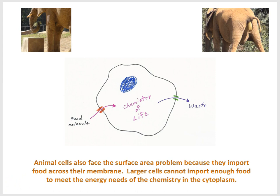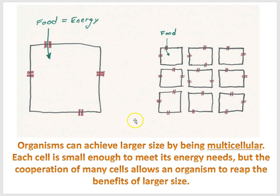So how do animals get around this? How can animals be big if their cells have to be small? And of course the answer is multicellularity. So organisms can achieve larger size by being multicellular. Each cell is small enough to meet its energy needs, but the cooperation of many cells allows an organism to reap the benefits of larger size.